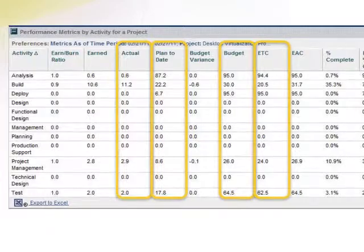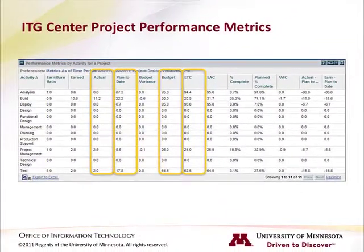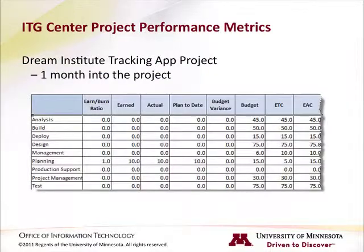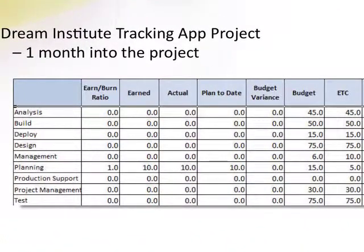Now that we have a basic understanding of the four core metrics, let's take a look at these metrics for the Dream Institute tracking app project that Jane Redding is managing. The Dream Institute tracking app project is just getting started. Most of the values in the portlet are currently at zero; however, we can see what's been budgeted for each activity.